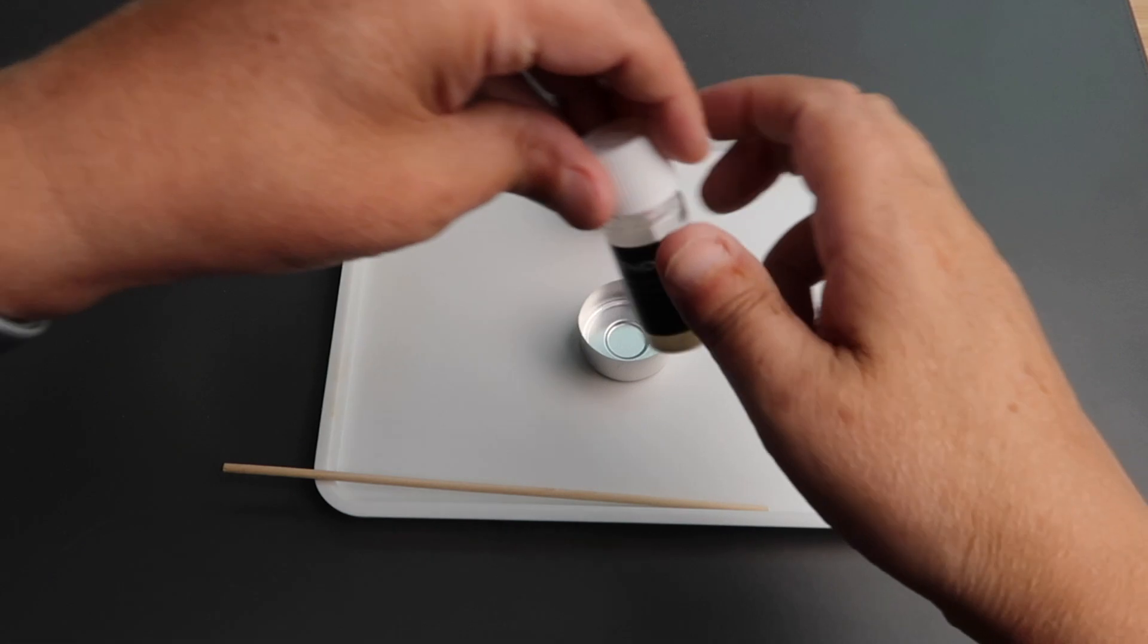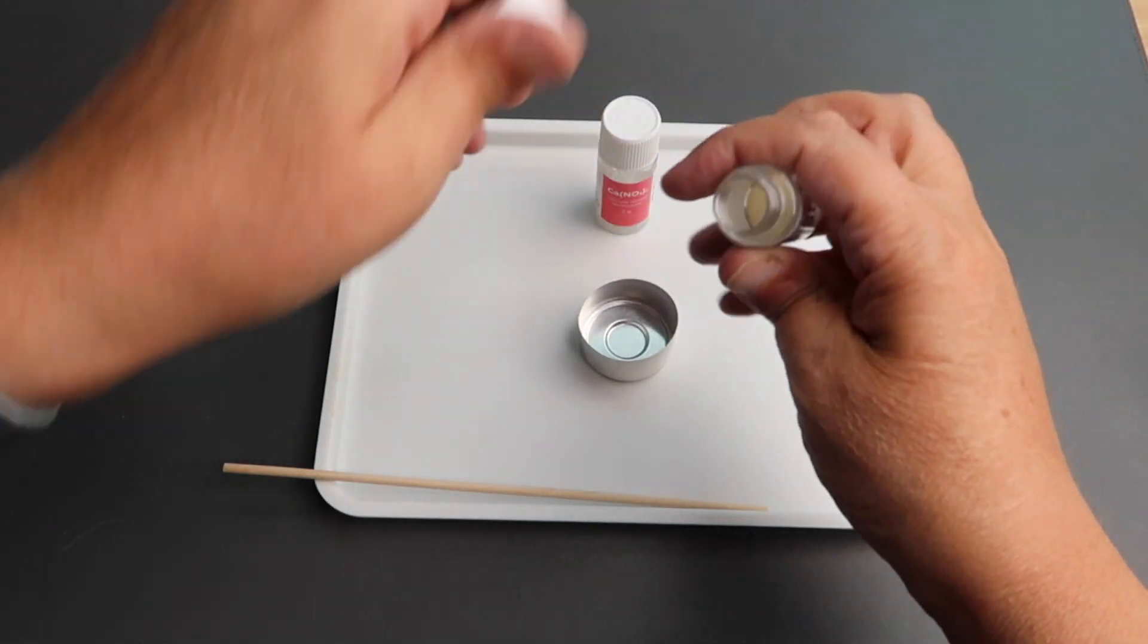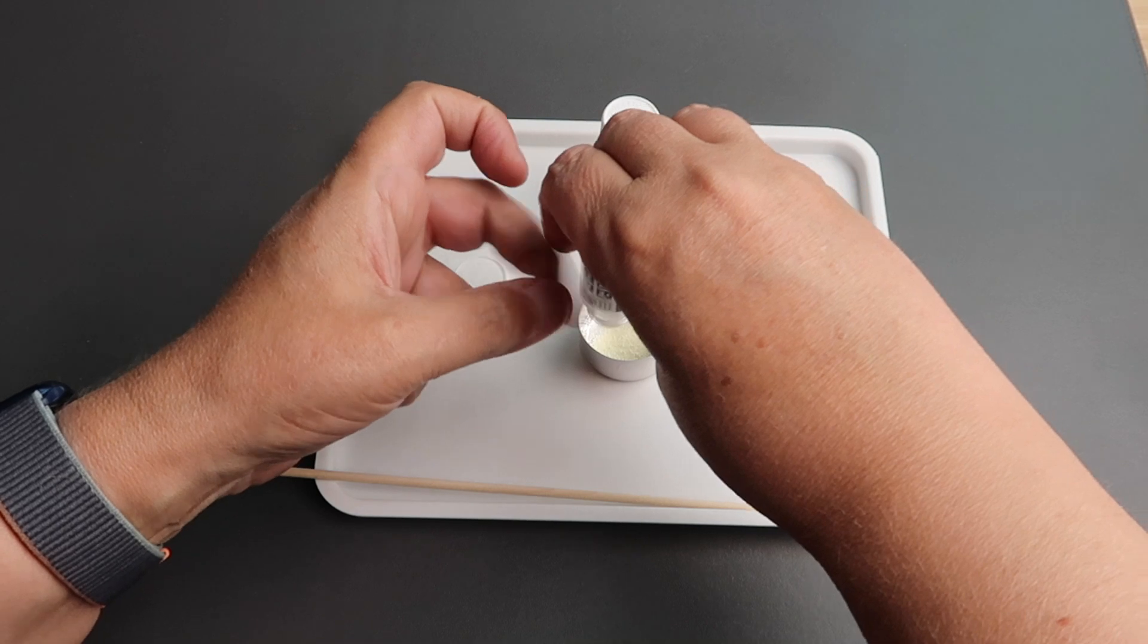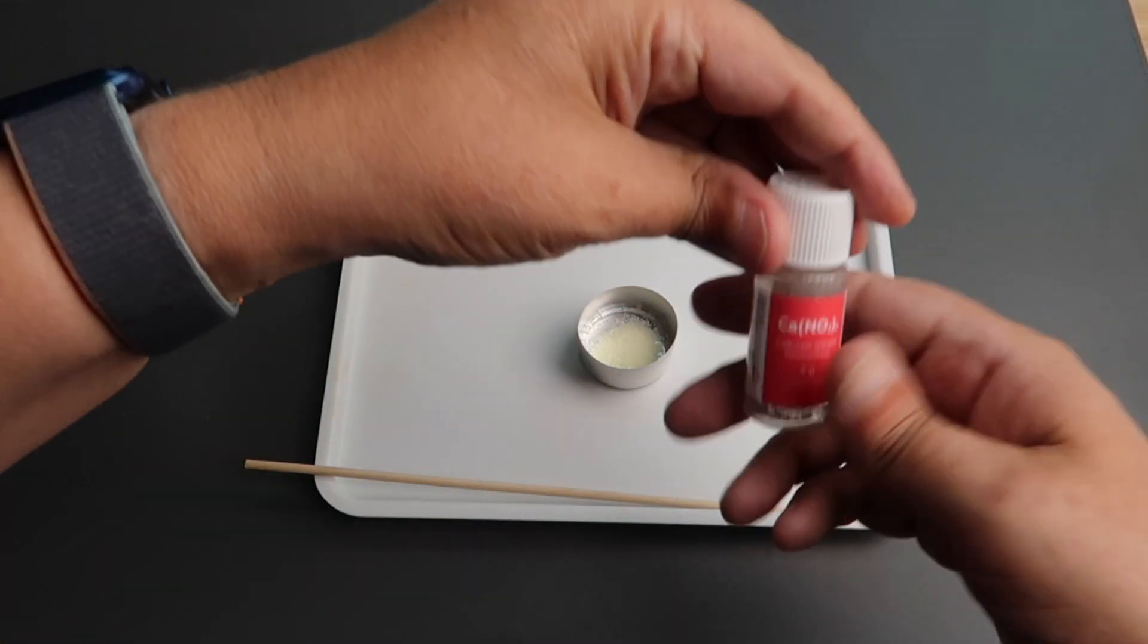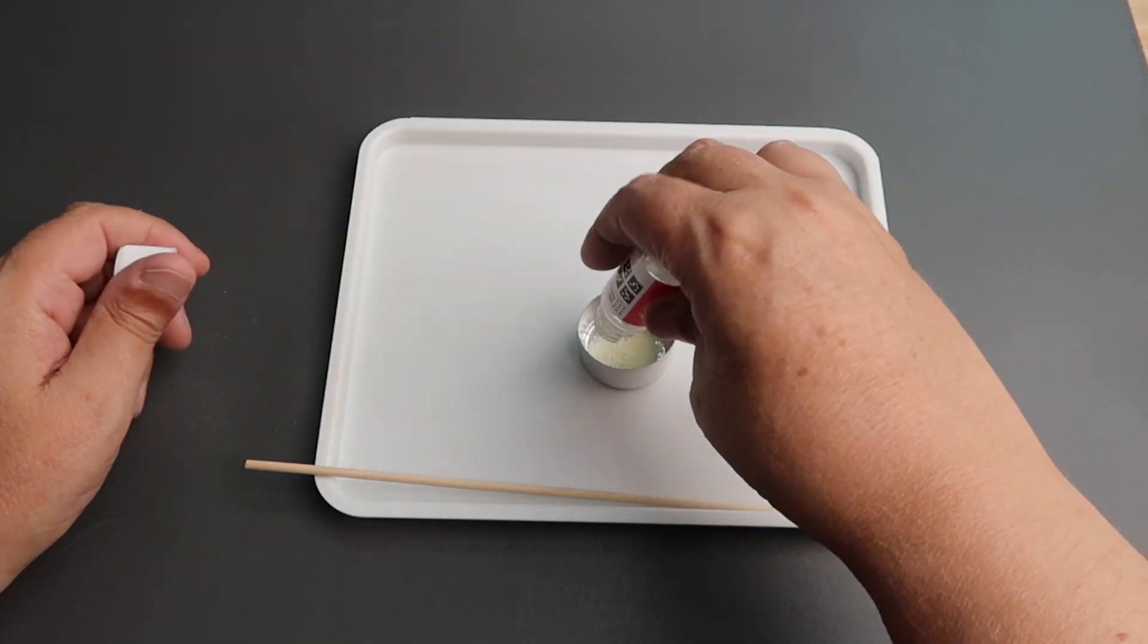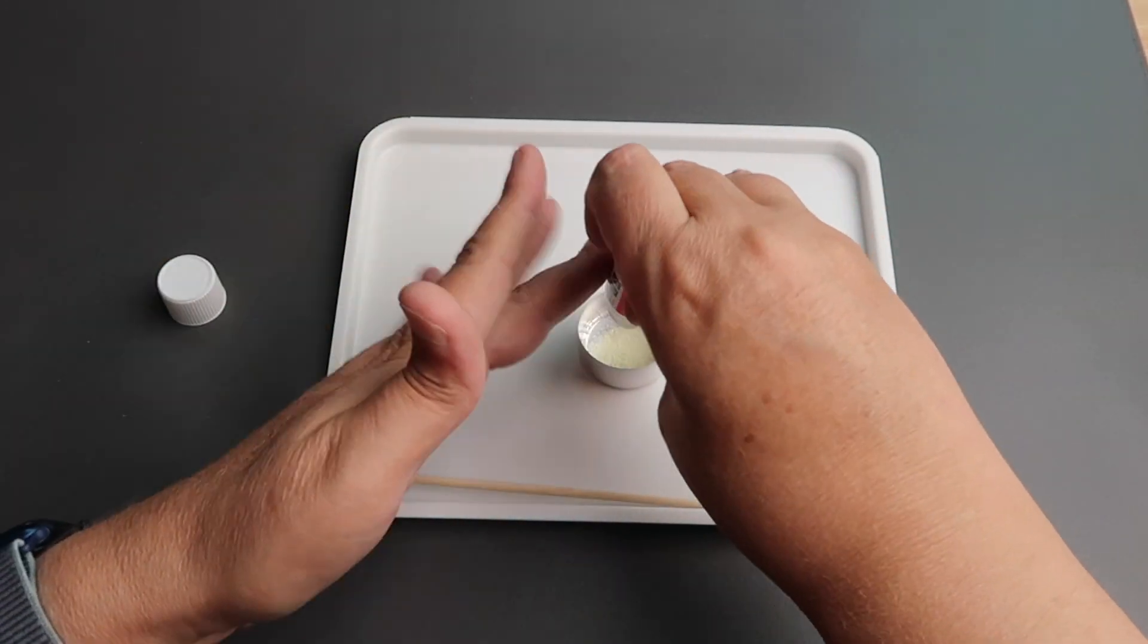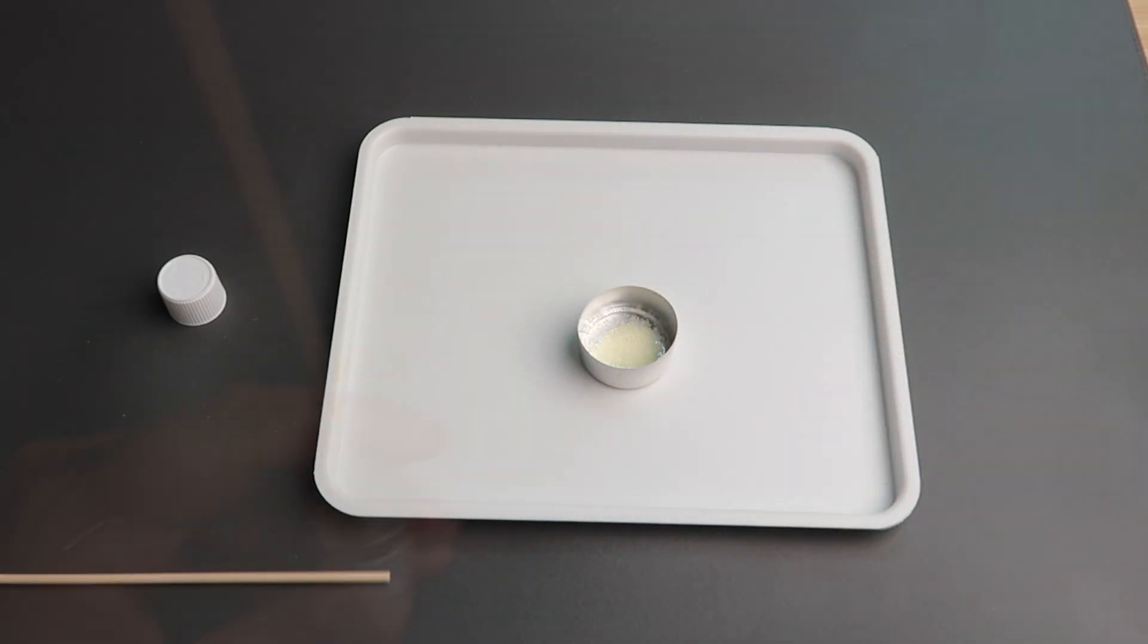First, mix an entire bottle of each of the two ingredients and stir them together thoroughly. In my kit, the calcium nitrate got stuck on the inside of the bottle so I had to scrape it out.